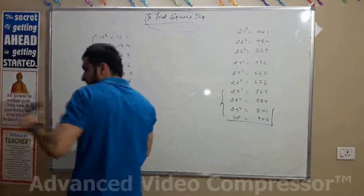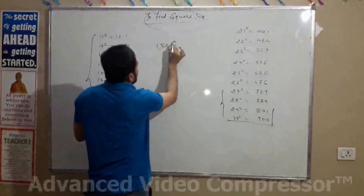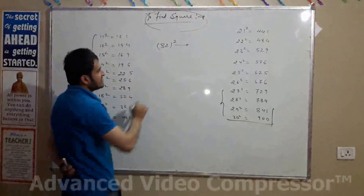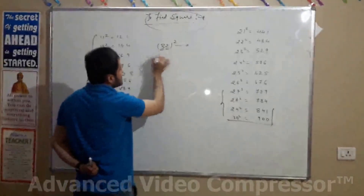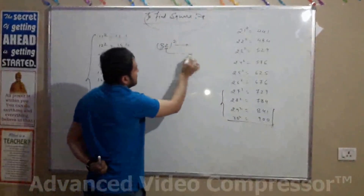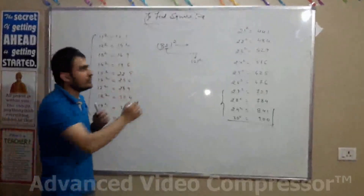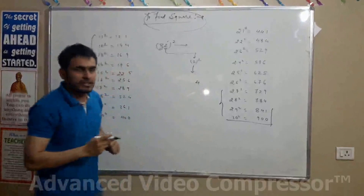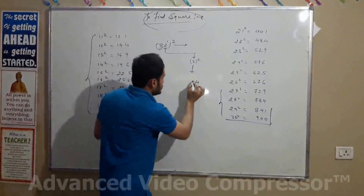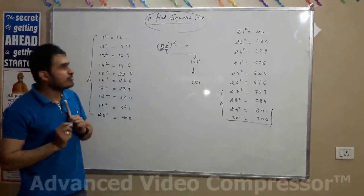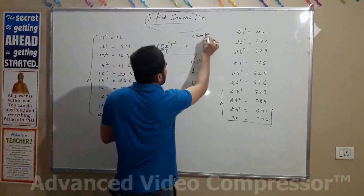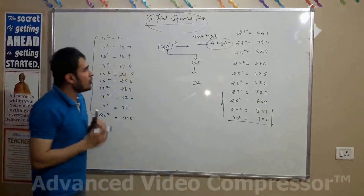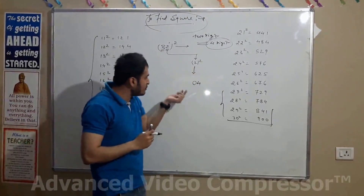Let's take an example: 32. If you have to find out the square of 32, it is very easy. The unit digit is 2. First, square the unit number — unit number is 2, so the square of 2 is 4. But we write it as 04, because the square of a 2-digit number equals a 4-digit number, so we must write 04, not just 4.